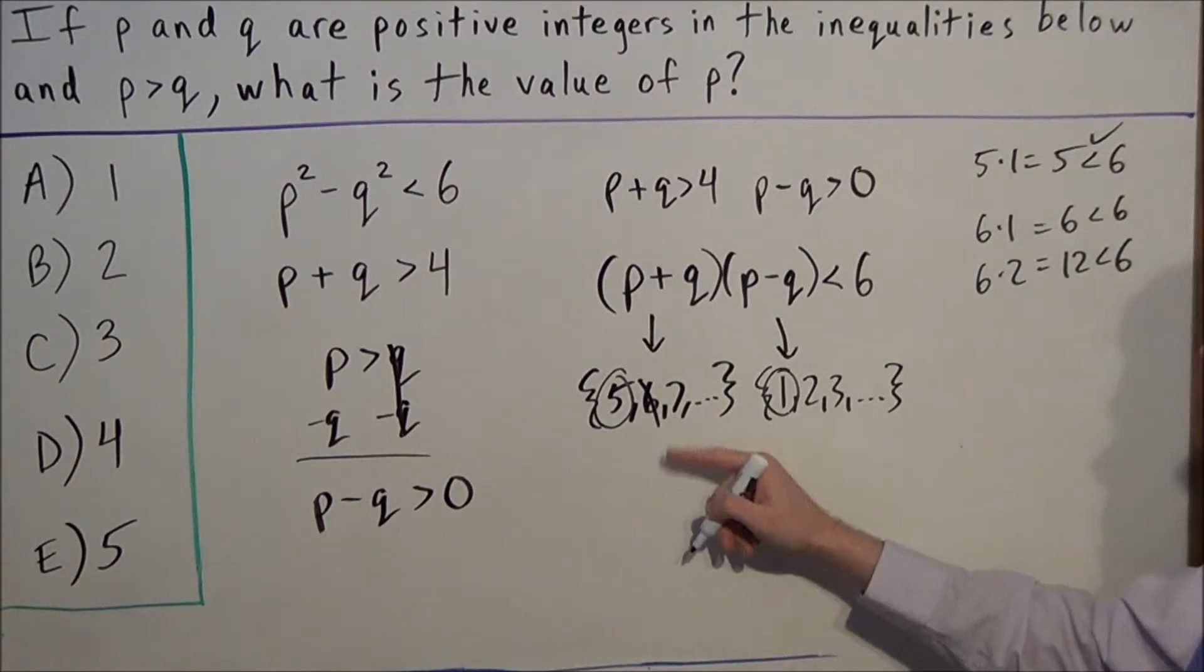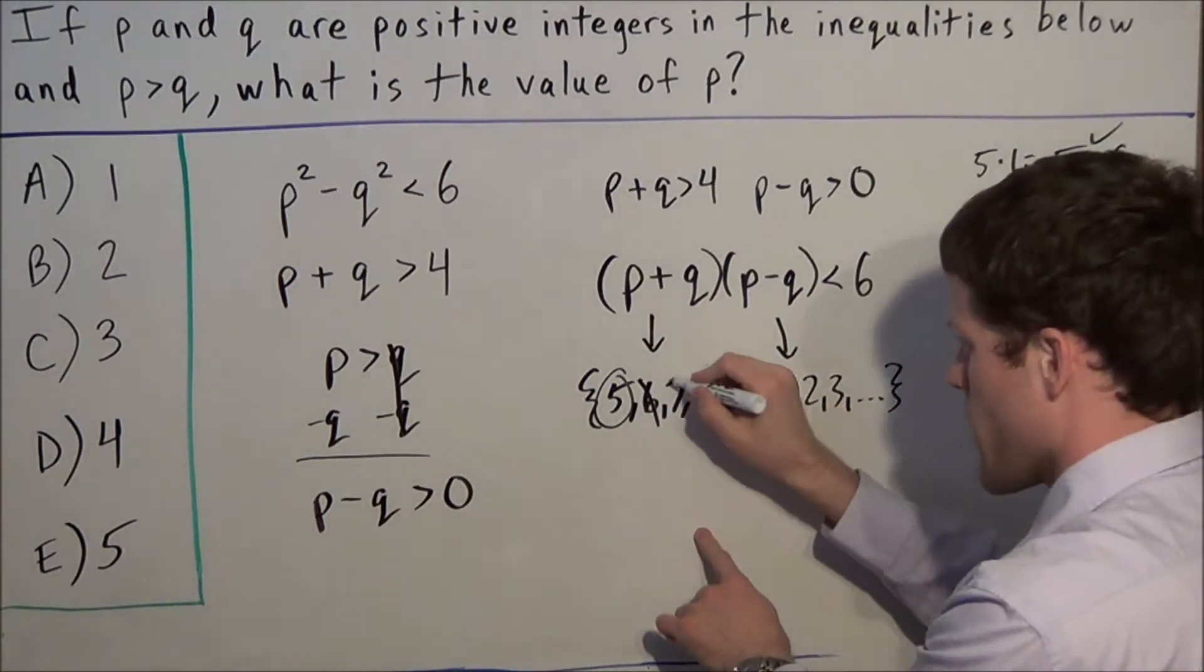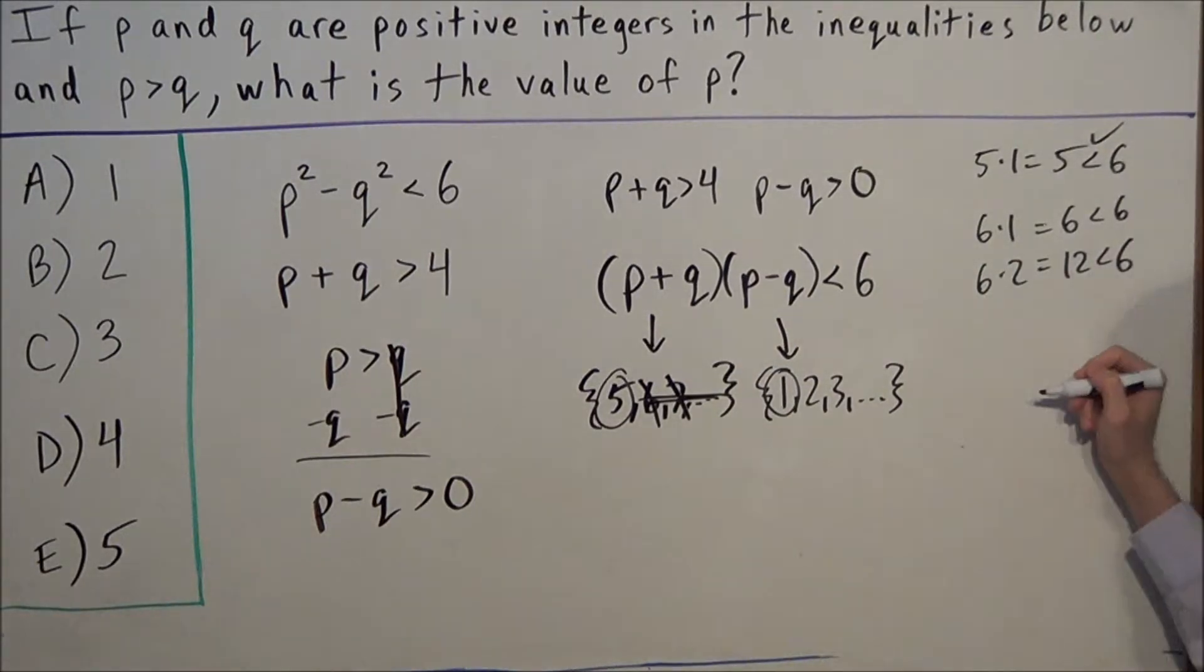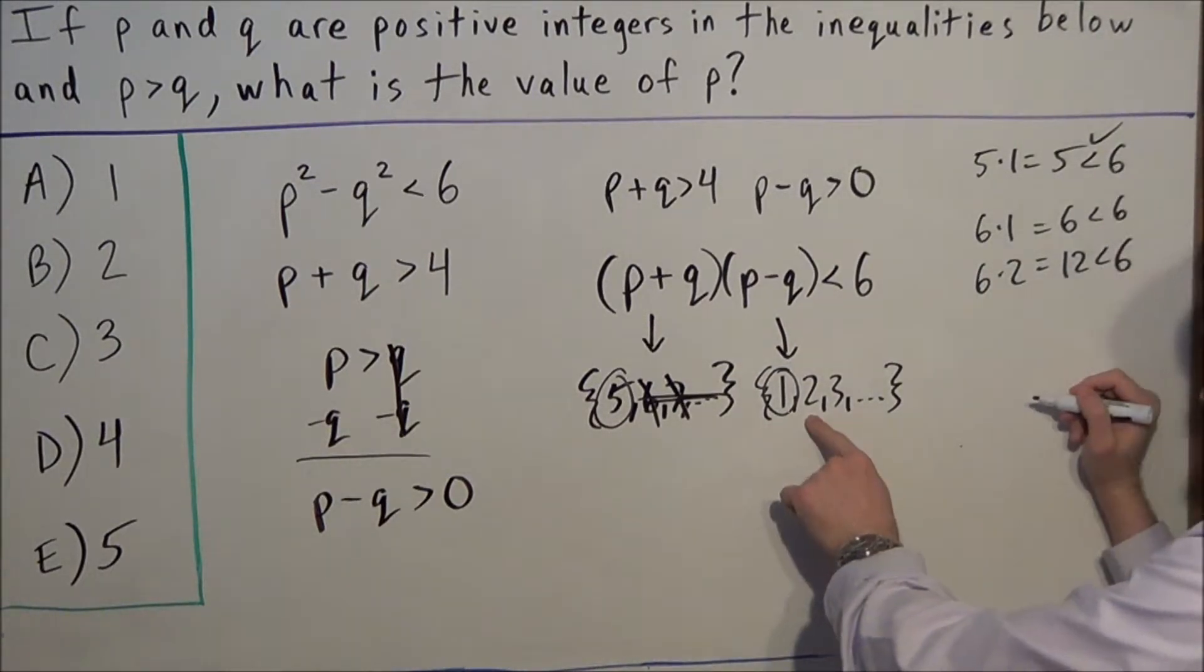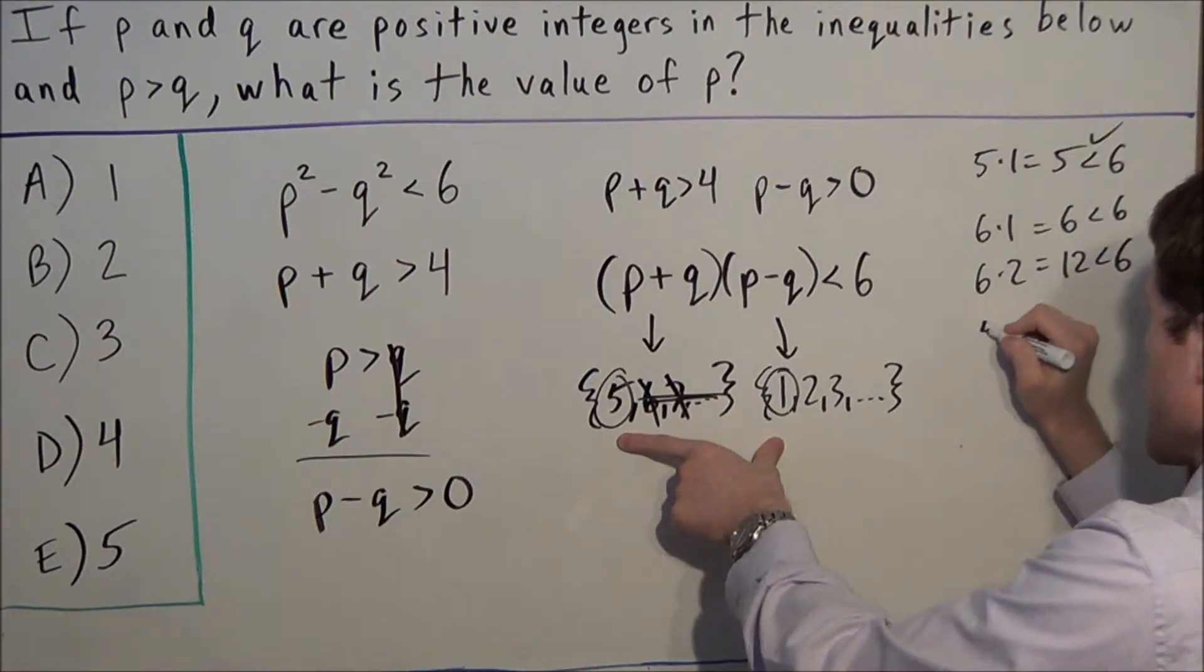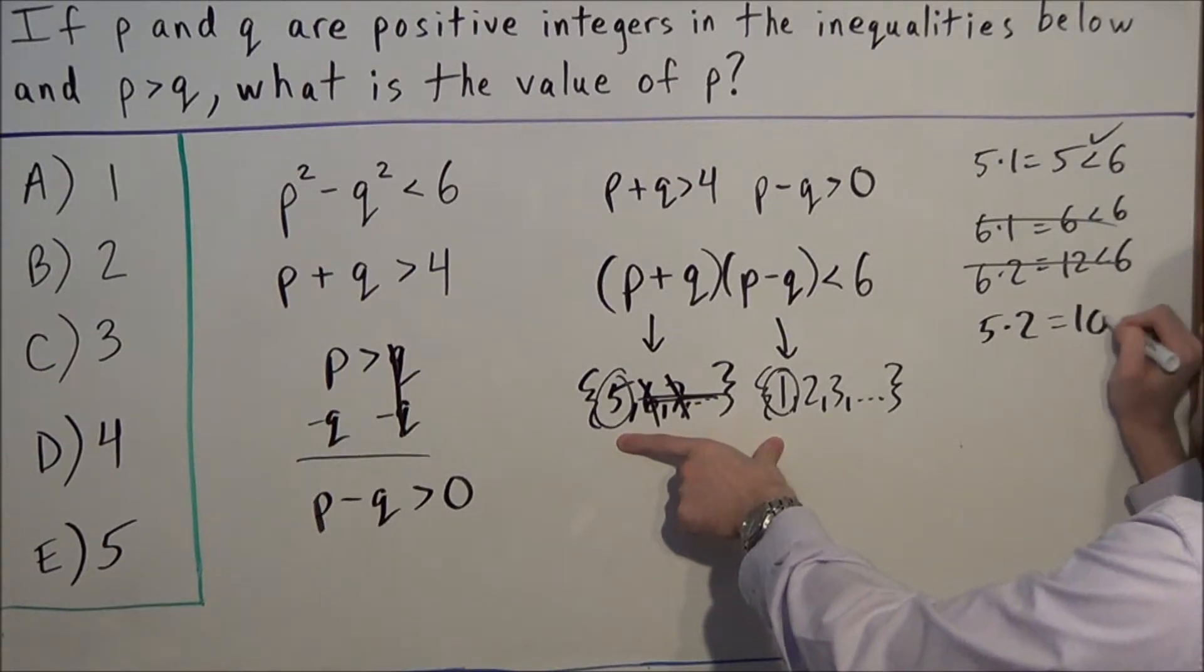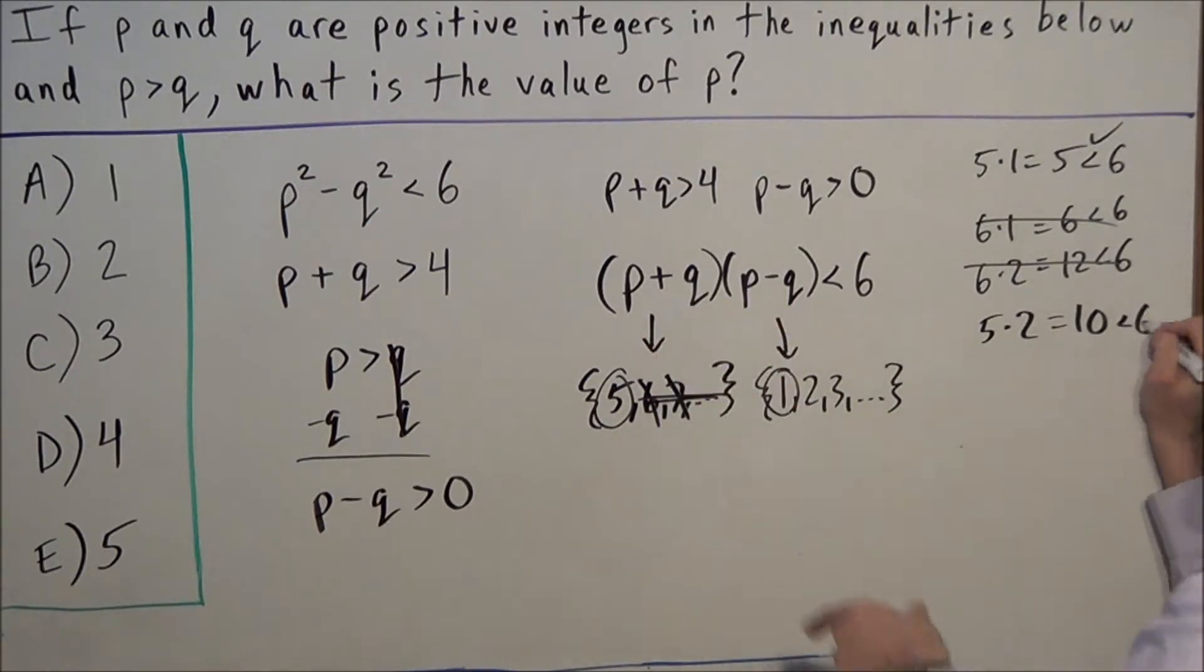If we try 7, 7 × 1 is not less than 6, so that won't work. We can rule out those numbers. Likewise, if we try anything greater than 1 for the second list, notice 5 × 2 = 10.